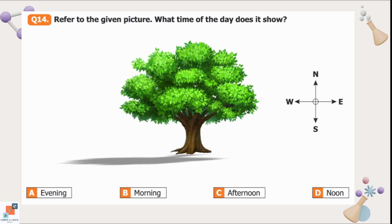Question number 14: Refer to the given picture. What time of the day does it show? The directions are given here. We know that sun rises from the east and makes the shadows of the objects on the opposite side. So if sun rises from the east it will make the shadow on the west side. This is morning actually. So option B is the correct option.